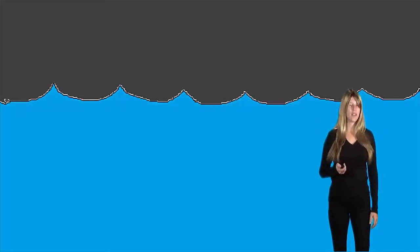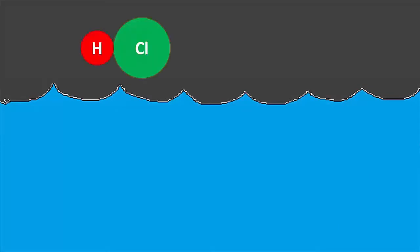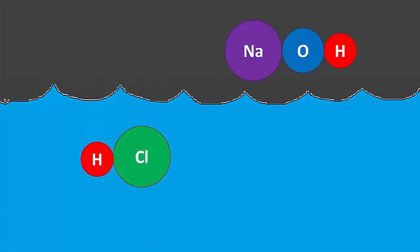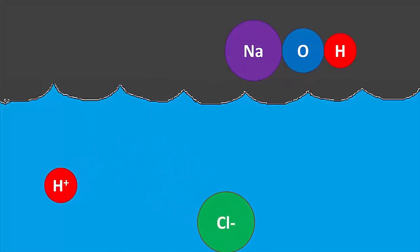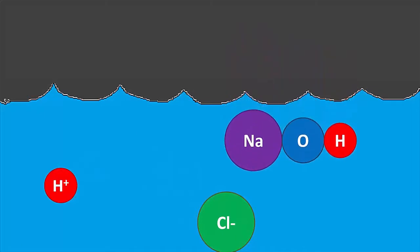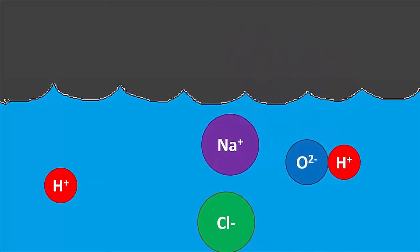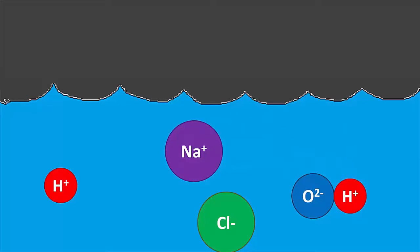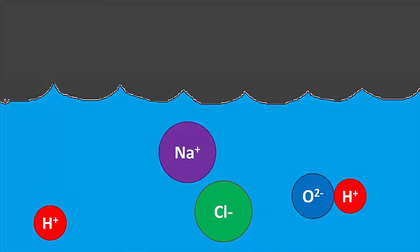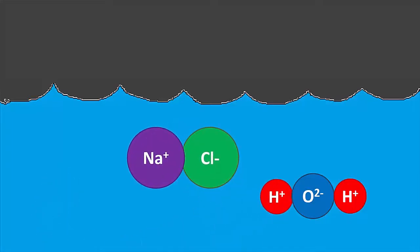Let's look at how this actually happens. With hydrochloric acid and sodium hydroxide, when hydrochloric acid is put into water it forms its ions, and sodium hydroxide similarly forms a sodium ion and a hydroxide ion. The H⁺ ion from hydrochloric acid joins with the OH⁻ from sodium hydroxide to form water, and the sodium and chloride come together to form sodium chloride.